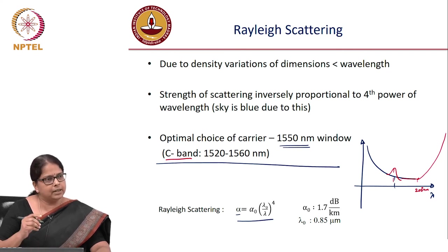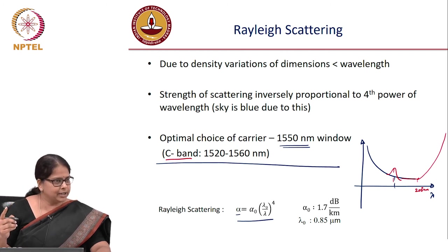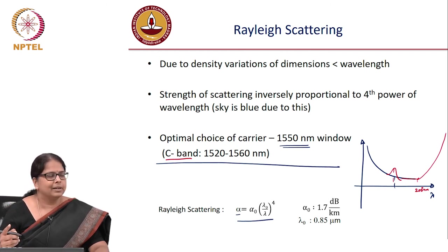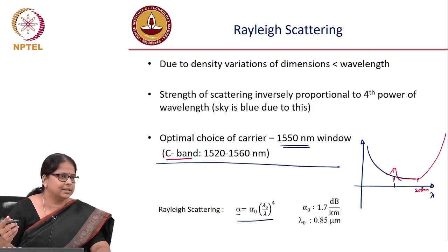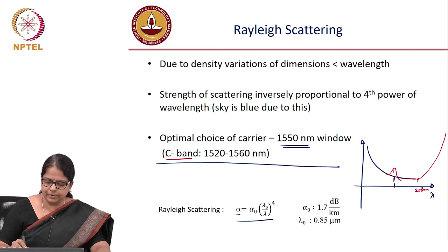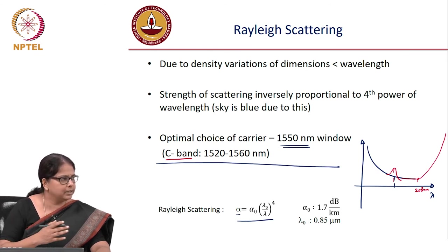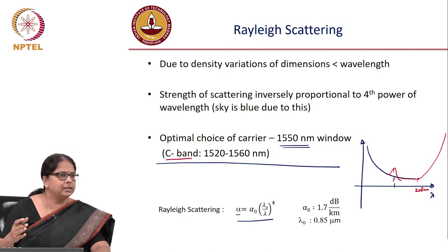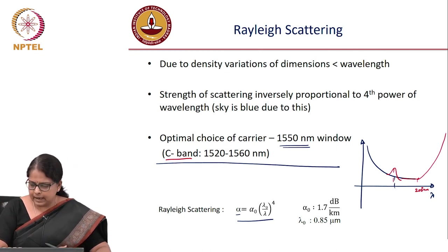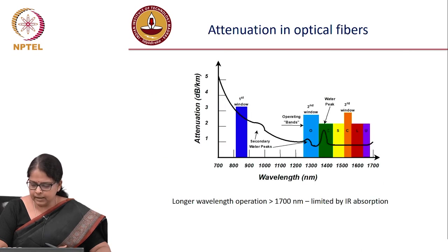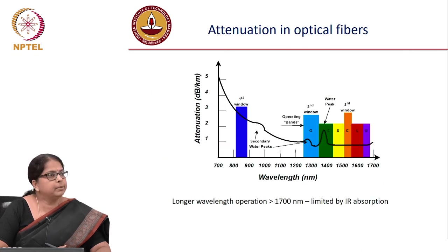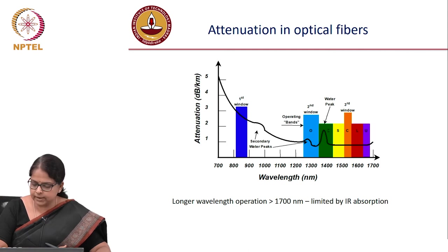The optical C-band is not the same as the radar C-band (8–12 GHz). In optical communication, C-band spans 1520–1560 nm, equivalent to approximately 189–196 THz. This completes the more accurate picture of loss versus wavelength.